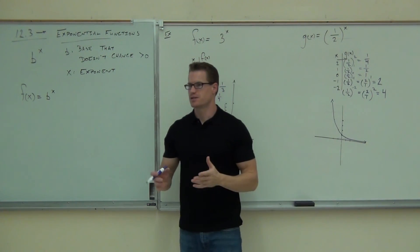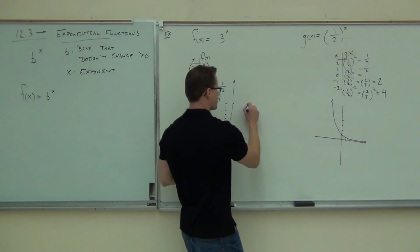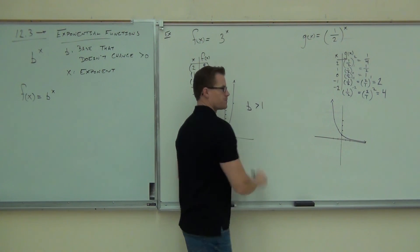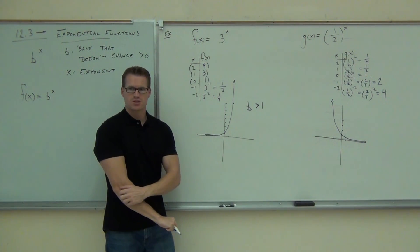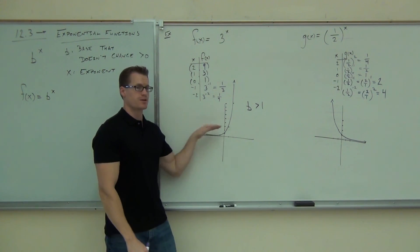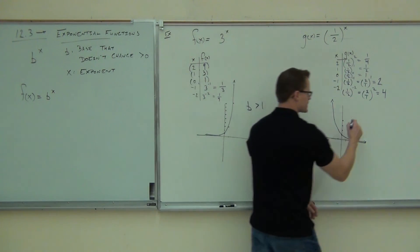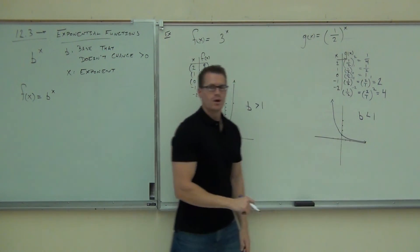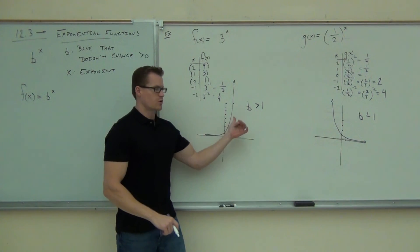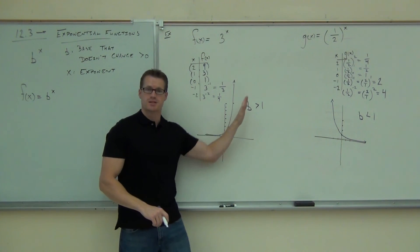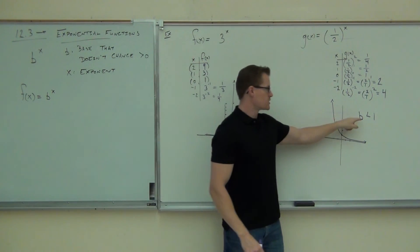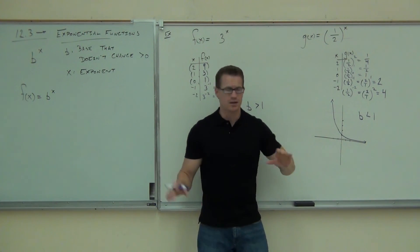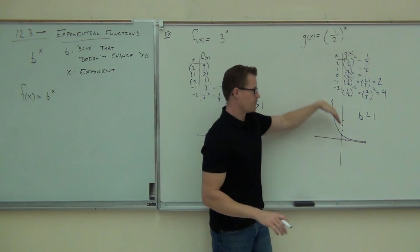Here's the summary of exponentials: if our base is greater than one, it will climb — it'll go up like that. If our base is less than one, it will fall. Fractions less than one — the graph will never be negative, it'll never go below zero, but it will fall like that.